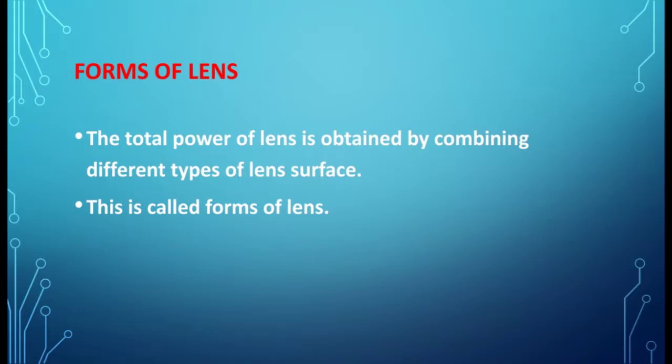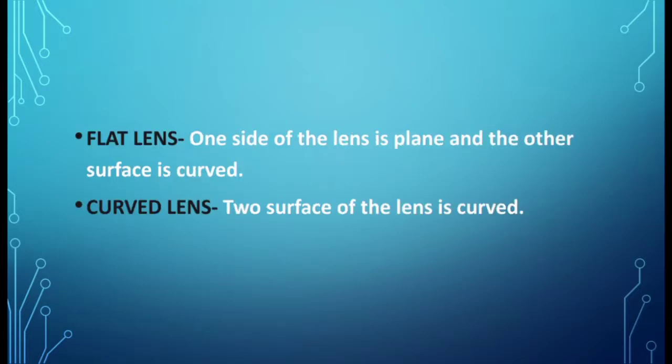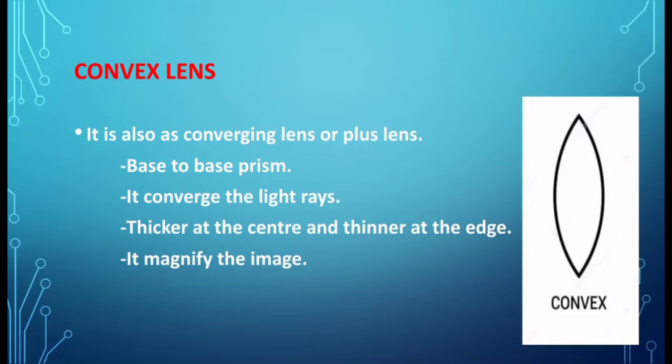Now we are going to see what the forms of lens are. In a lens, the total power is obtained by combining different types of lens surfaces — the lens has a variety of forms, and this is termed as forms of lens. Next, flat lens and under-curved lens: in a flat lens, one side is plane and the other surface is curved; in a curved lens, both surfaces of the lens are curved.